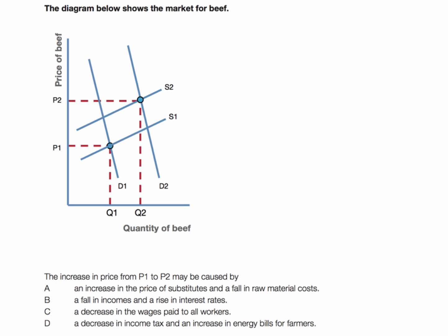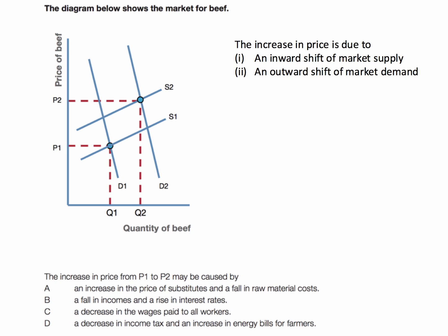We're told the price has gone up from P1 to P2 and we're asked what's the main cause of this. Notice in the diagram that the increase in the equilibrium price of beef is a result of two changes in the market: an outward shift of demand, D1 to D2, and an inward shift of supply, S1 to S2. So given those are the two causes, we're looking for a combination of causes that meets this double change.